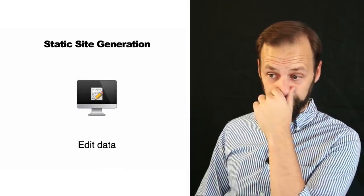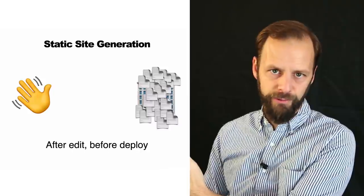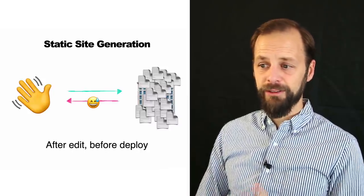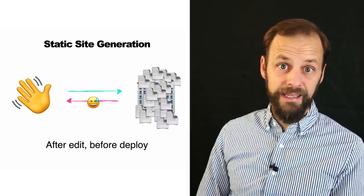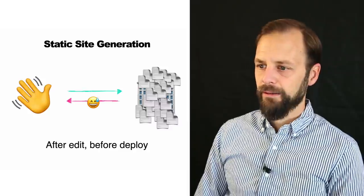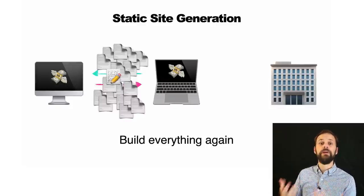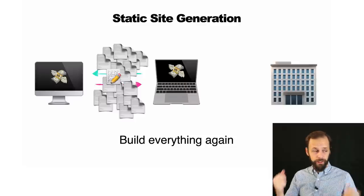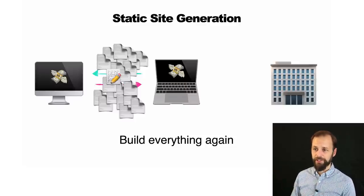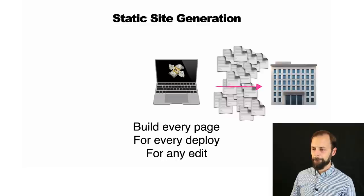Now let's say you edit some data. What does that mean for static site generation? Something in your database changed, but your CDN still has all those documents from the last deploy. If the user visits the page, they'll get a fast response, but it's stale — it's not up to date. We'll use a sweaty emoji for a stale response. To turn that sweaty smiley into just a smiley, you have to rebuild the entire website. That means rebuilding every single page for every deploy for any edit.